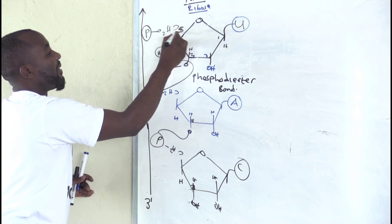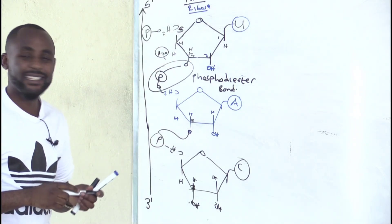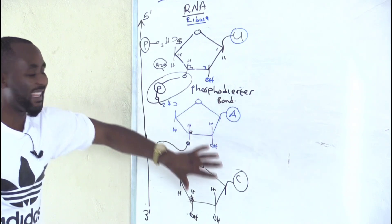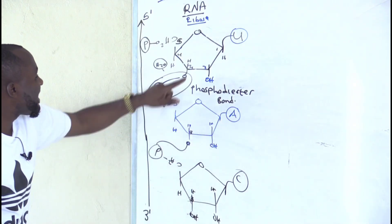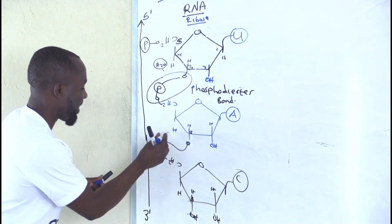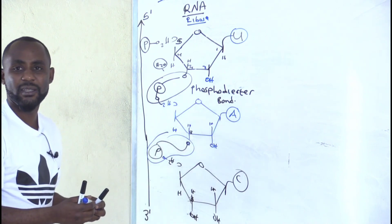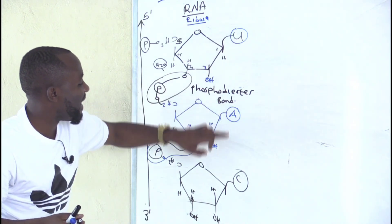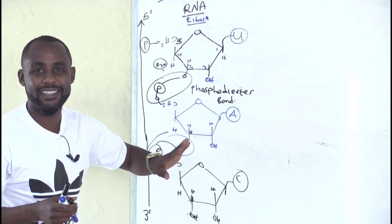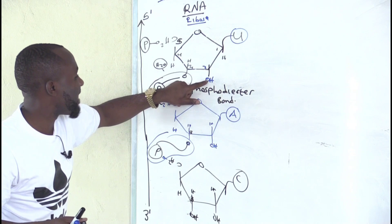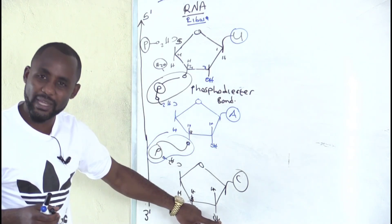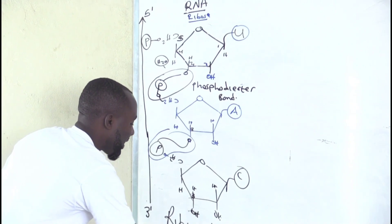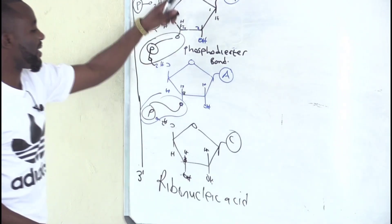We begin with the phosphate on carbon number five, so we call it the 5-prime end. When you link one nucleotide to another and another until you have a long chain of nucleotides linked by phosphodiester bonds, and you ensure you don't put any thymine on the bases — you can use any other base other than thymine — and on carbon number two you ensure there is OH attached, meaning you are using a ribose sugar. When you do that, the structure you've manufactured is what we call ribonucleic acid. This is the structure of RNA.